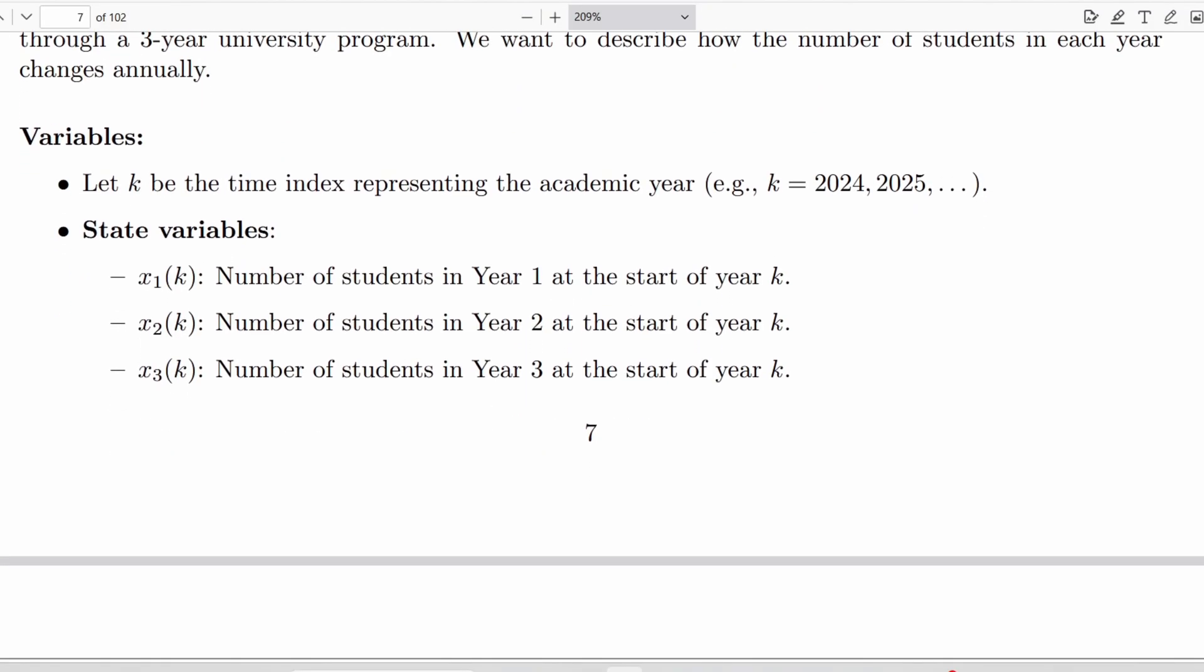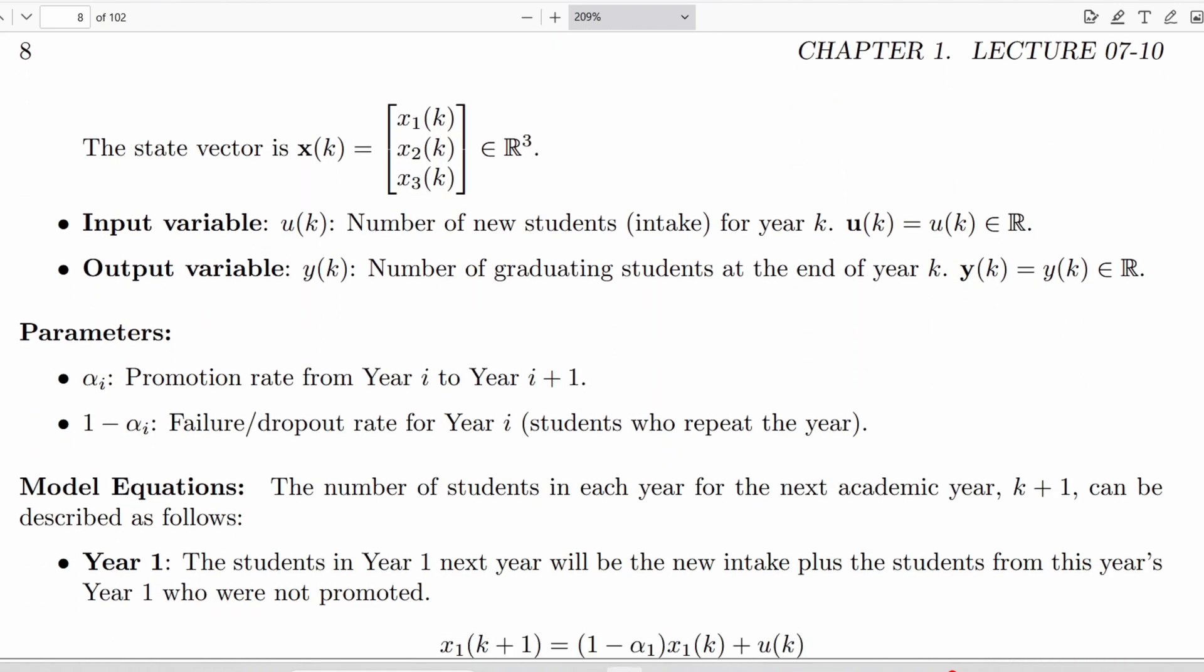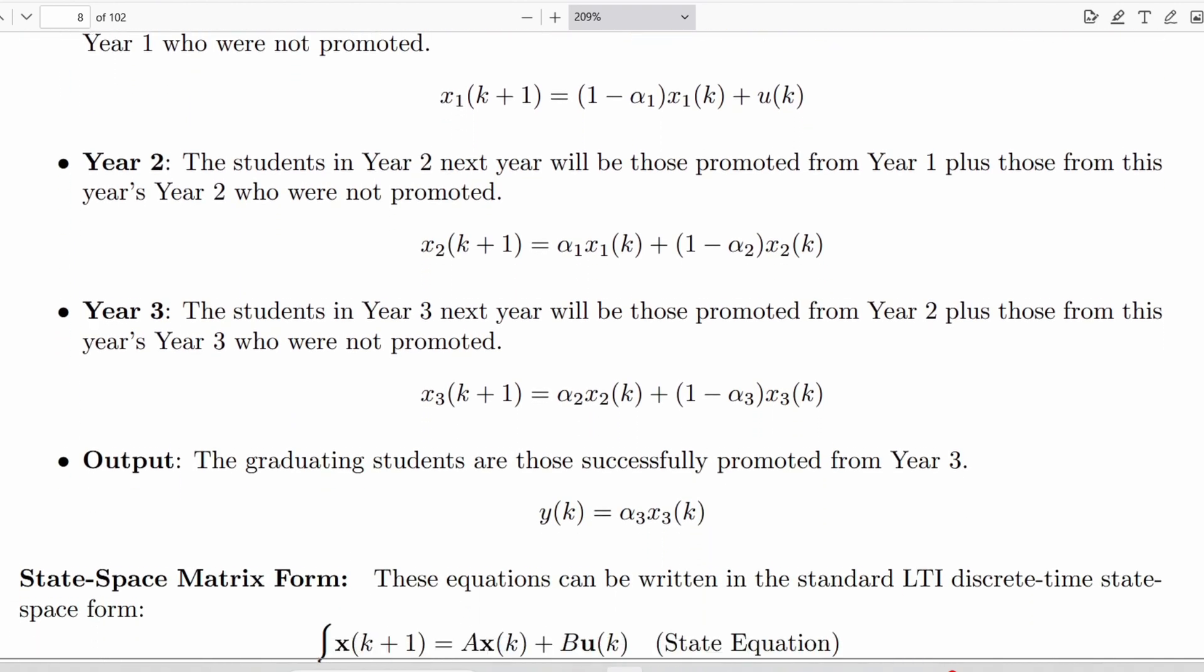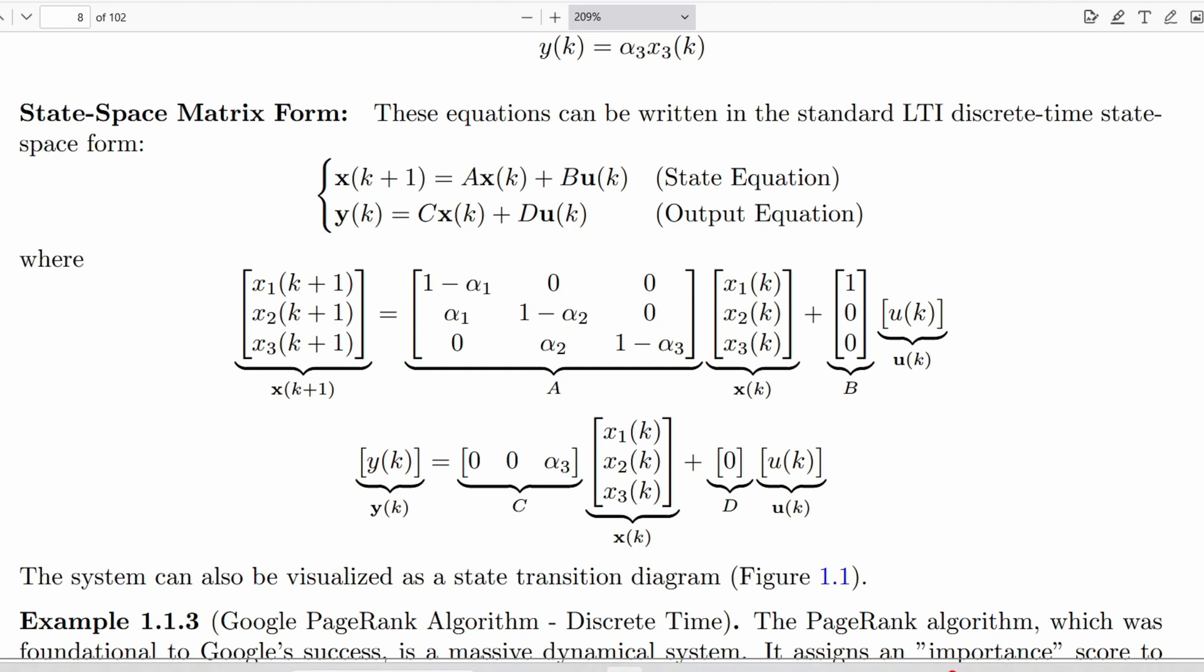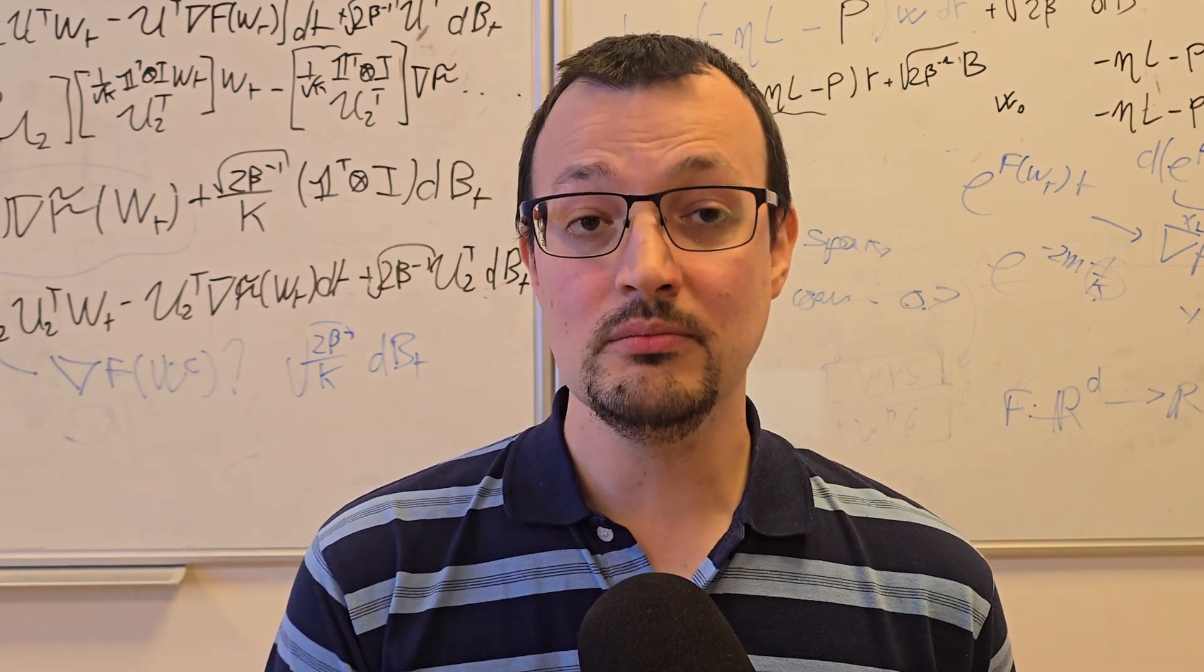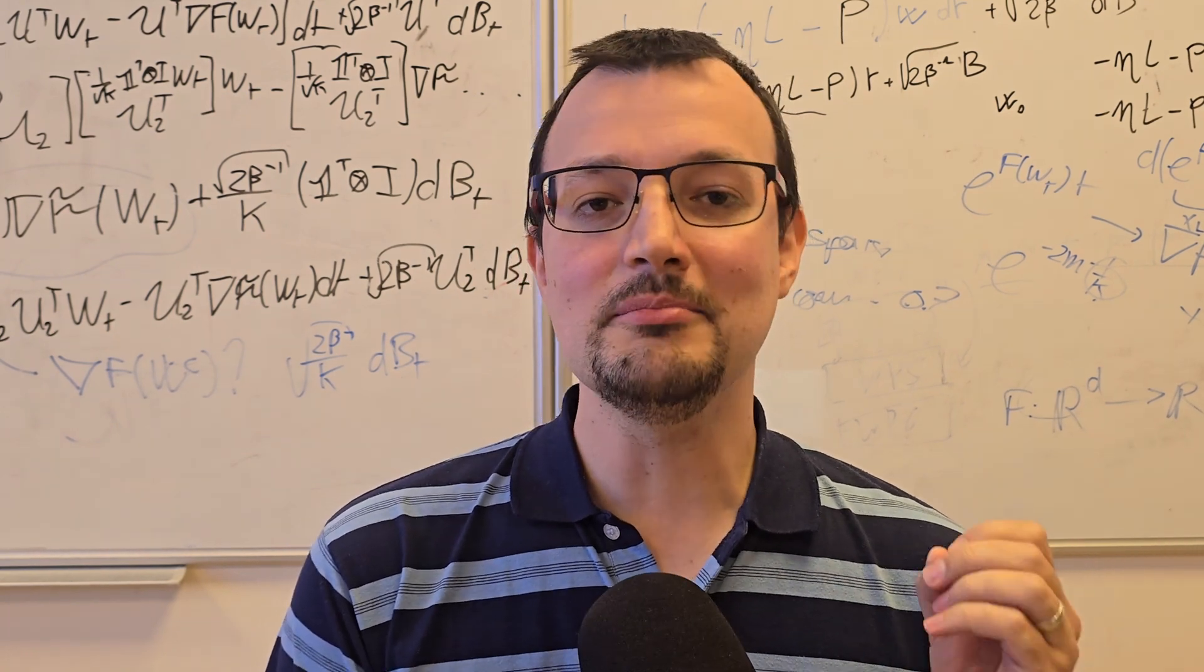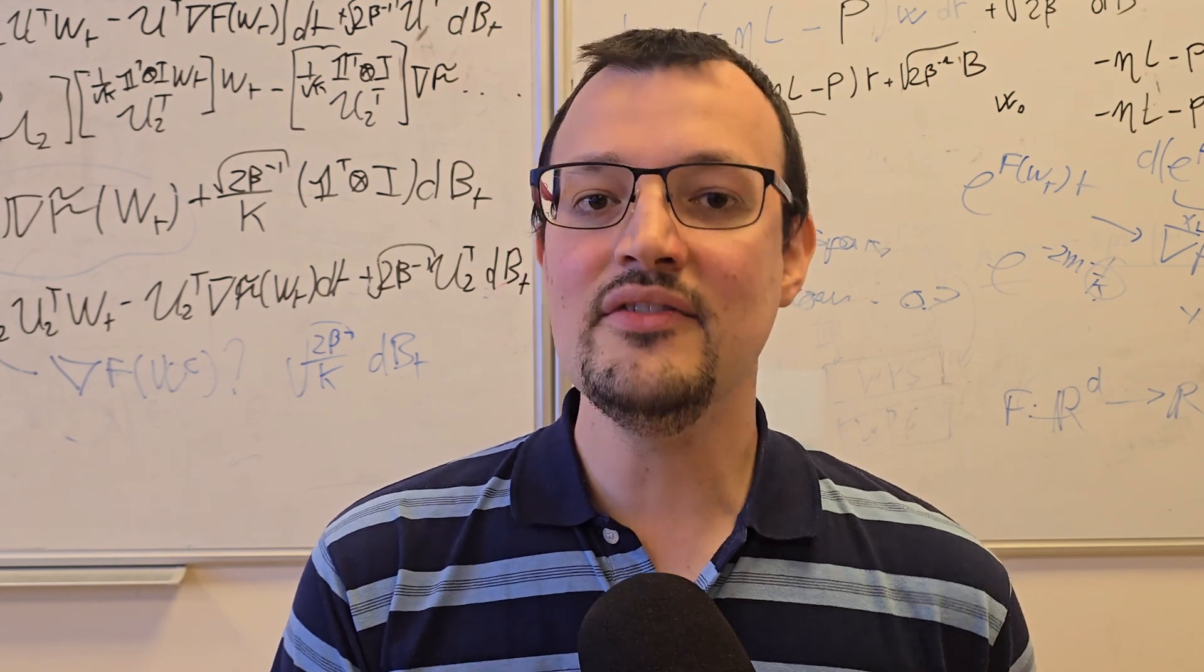Now watch what the AI produced from that. The result is astonishing. It correctly identified the state variables, the inputs, the outputs, it inferred the meaning of promotion rates and failure rates, and most impressively it assembled the entire system into the standard state space matrix form, complete with correctly labeled A, B, C, and D matrices. This is not just a transcription. This is synthesis. It took a conceptual verbal description, a bad one, and translated it into rigorous mathematical language. The time saved here is already immense, but it gets even better.